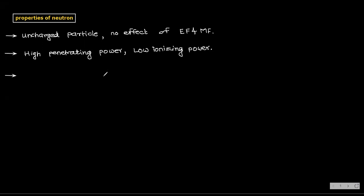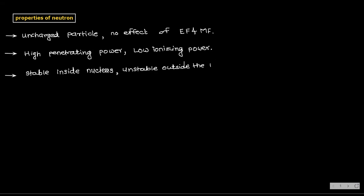Third property: if a neutron is inside the nucleus it is stable, but outside the nucleus it is not stable. That's why in a controlled chain reaction, neutrons will get absorbed immediately and the reaction will be continuous — that we will learn ahead.